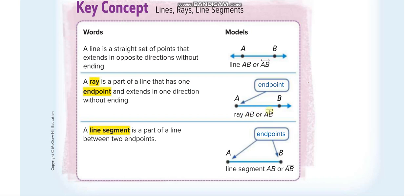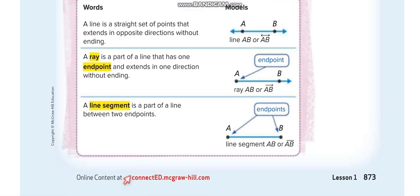The third and last thing is a line segment. A line segment is a part of a line between two endpoints — it is not extending. You see in a line there are arrows, but in a line segment there are no arrows. It is fixed, so it is not a line — it is a part of a line between two points.